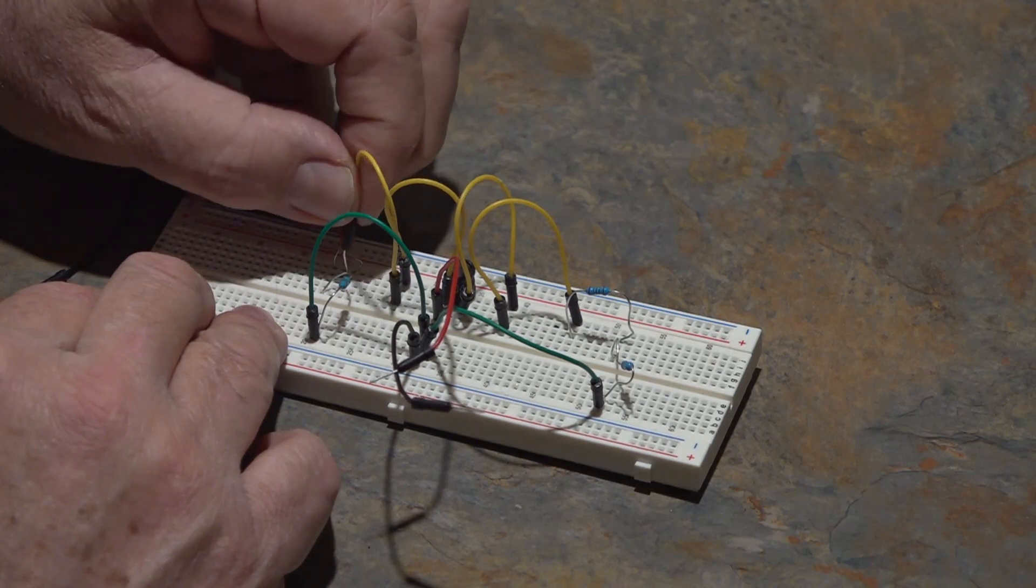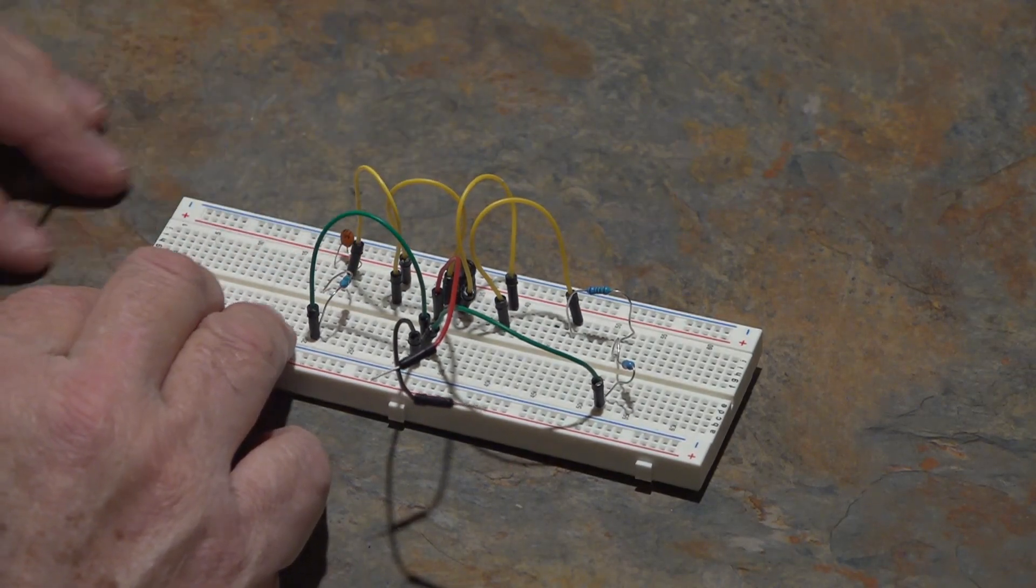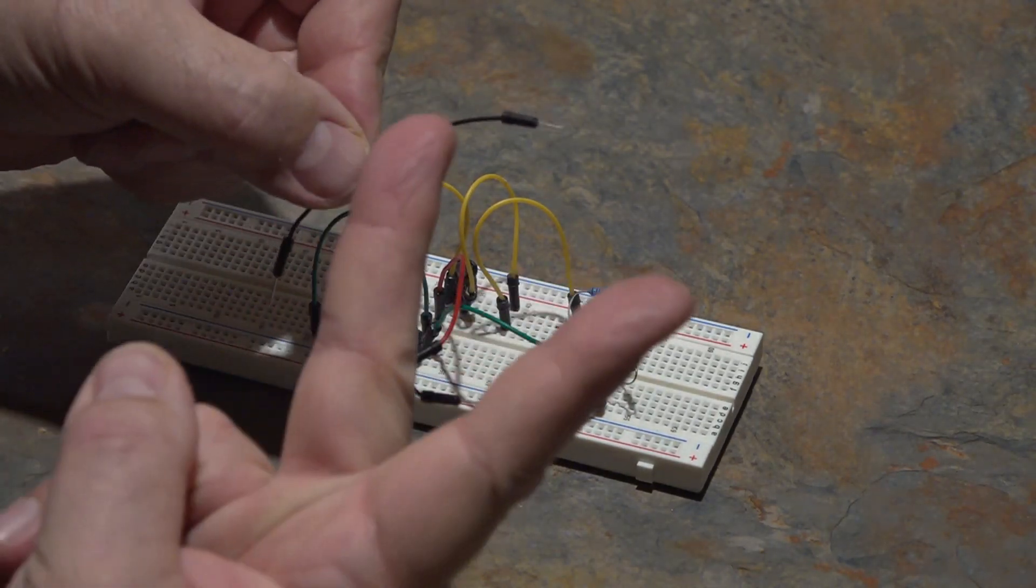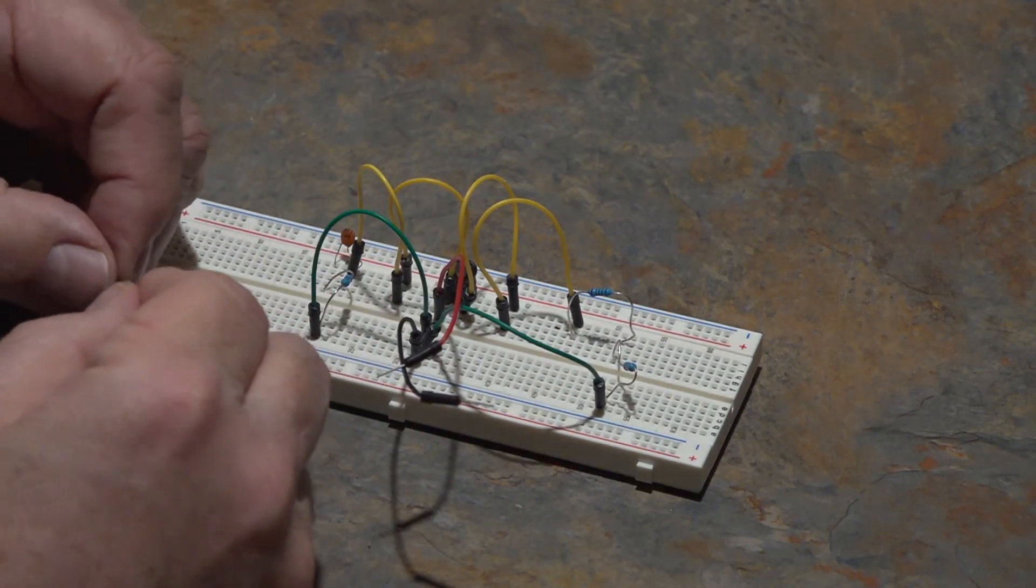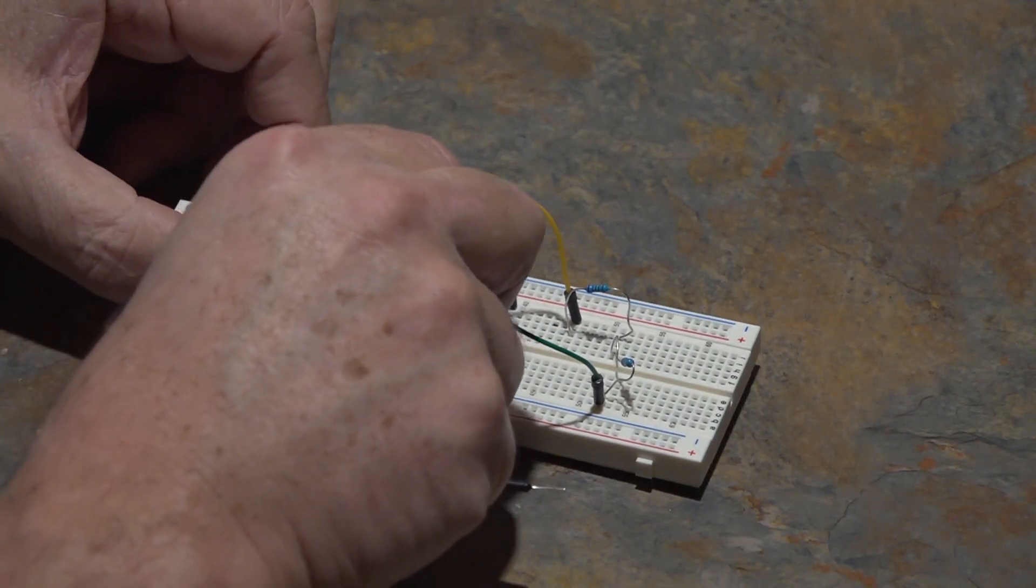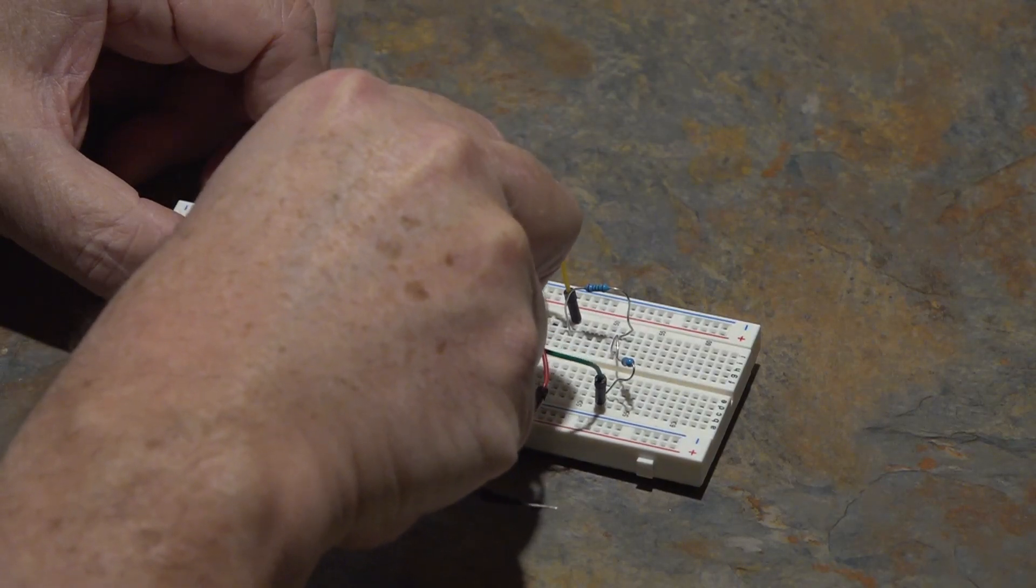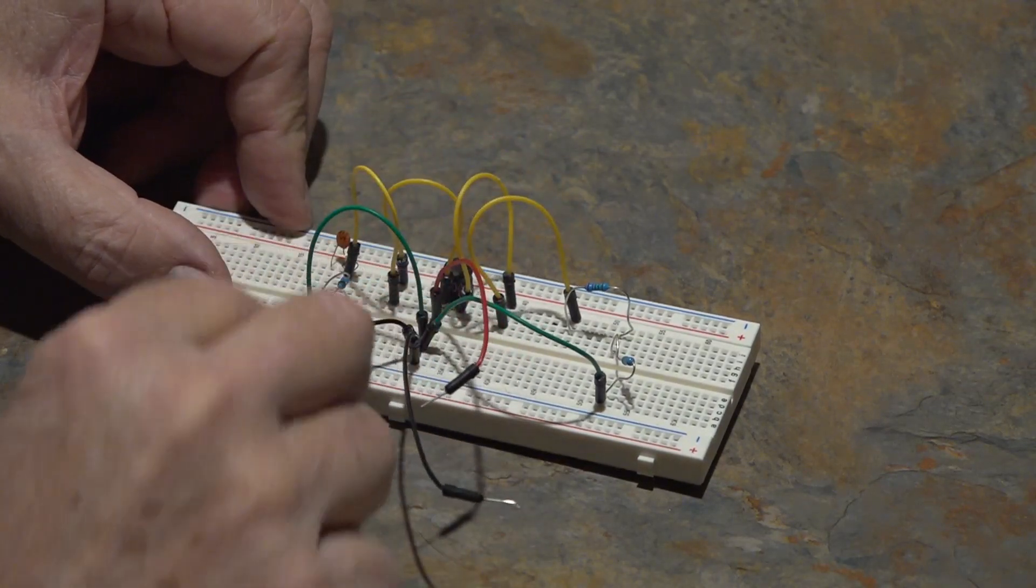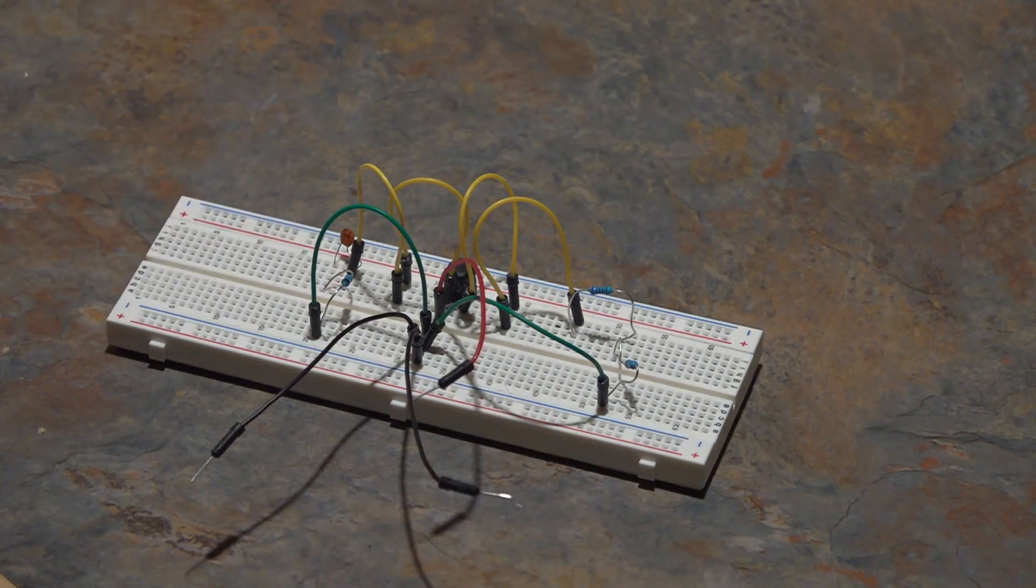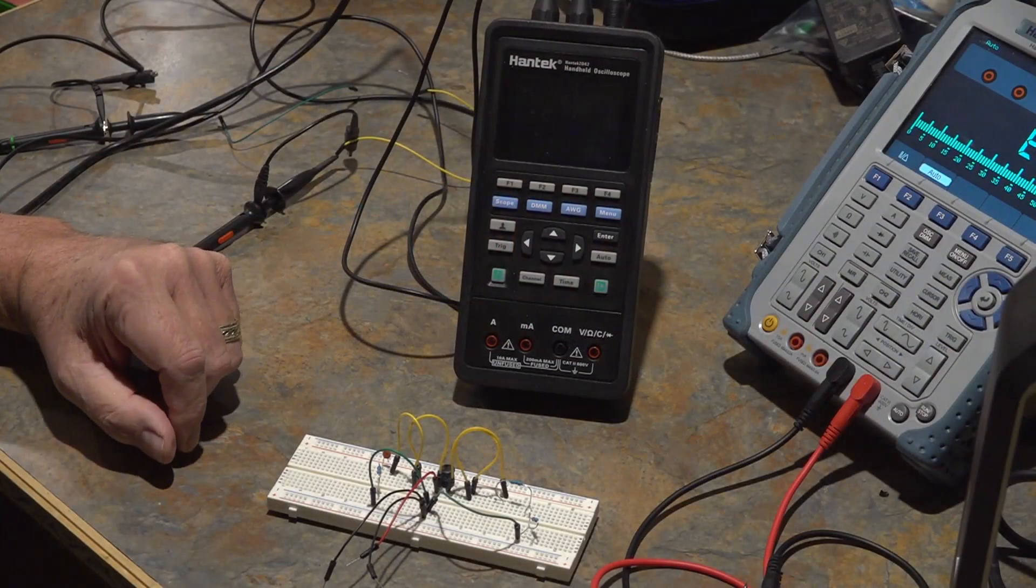There we go. Now I've got the capacitor loop built and I'm going to add a second ground so I can hook up both the ground of the function generator and the ground of the oscilloscope to the breadboard. That's the circuit all built.